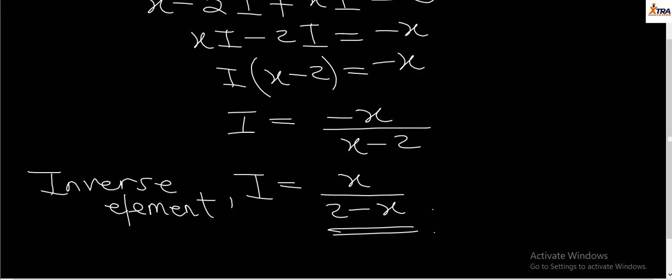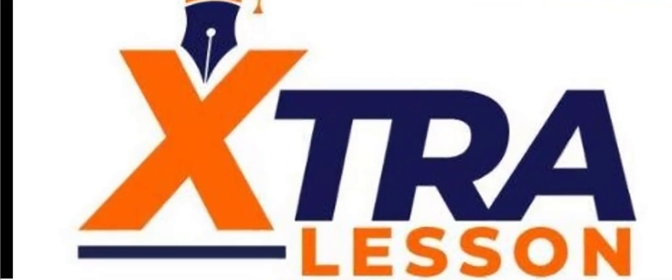So here we have successfully gotten the inverse element for this operation. In the next class, we'll be looking at another example of how we can approach the inverse element based on our understanding of the identity element. See you next class.